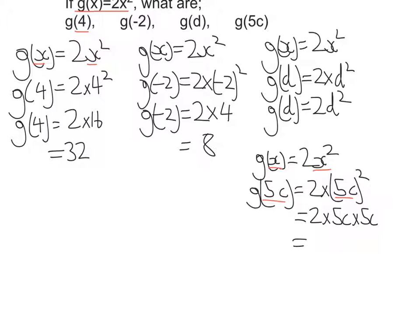So what have I got here? I've got 2 times 5 times 5. Well, 2 times 5 is 10 times another 5 is 50. And I have c times c, so that's c squared. So g(5c) is 50c squared.